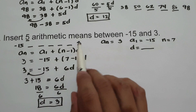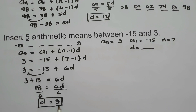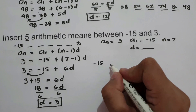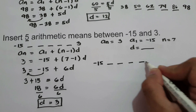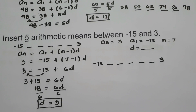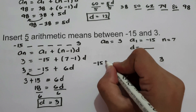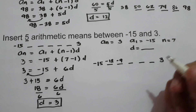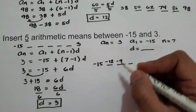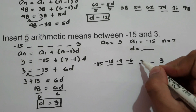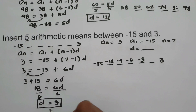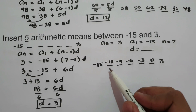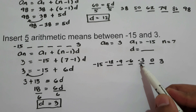To find the 5 arithmetic means between negative 15 and 3, add 3 to each term. So: negative 15 plus 3 is negative 12, negative 12 plus 3 is negative 9, negative 9 plus 3 is negative 6, negative 6 plus 3 is negative 3, and negative 3 plus 3 is 0. Therefore, the 5 arithmetic means between negative 15 and 3 are negative 12, negative 9, negative 6, negative 3, and 0.